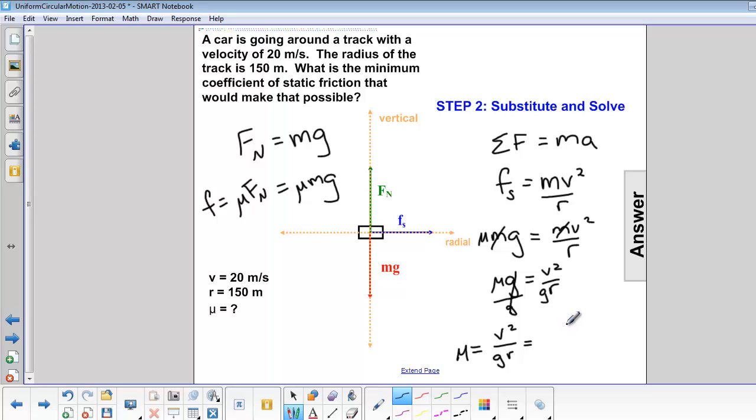Plug in our numbers. It's 20 meters per second for velocity. g is 9.8 meters per second squared, and r is 150 meters. Calculate that, and you get 0.27. And remember there are no units for coefficient of friction.